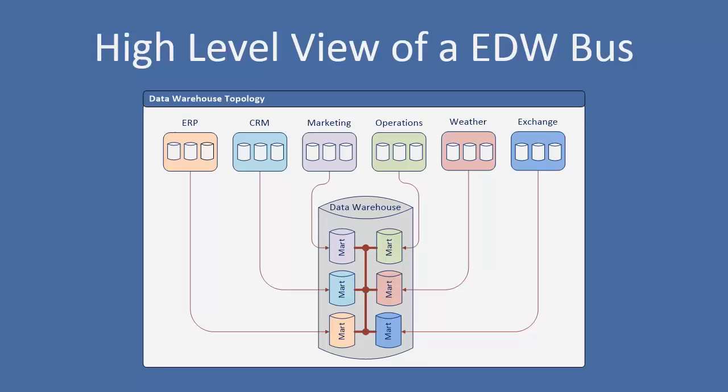For us to be able to take individual data marts and report on them in unison — to pull data from multiple data marts to create a report — we have to know that the reference data is the same in each of those marts. Date has to be the same regardless of which mart I'm pulling from; product has to be the same. This is the bus architecture. Having a way of plugging those marts into a single bus is what enables us to create an integrated data warehouse. Otherwise, we end up with individual data marts that are siloed pieces of data that know nothing about each other, not too far removed from the source systems themselves.